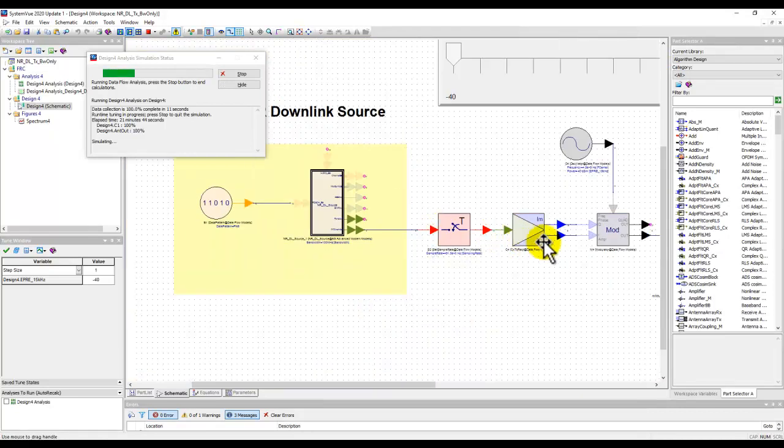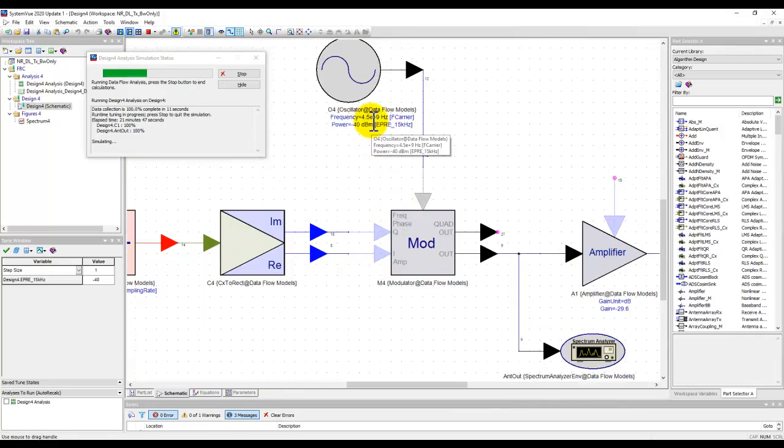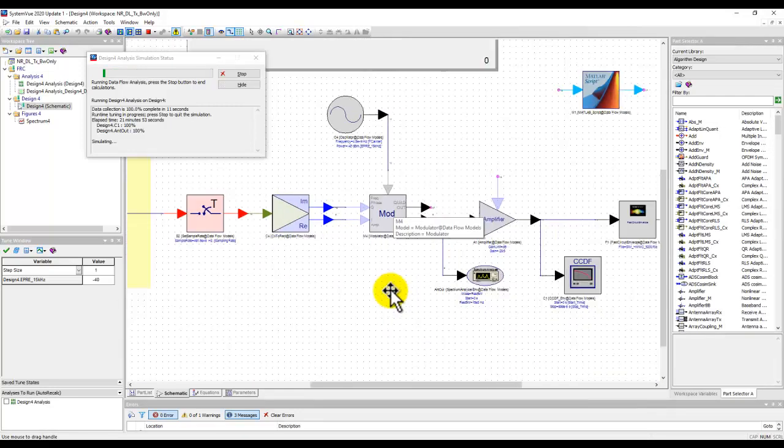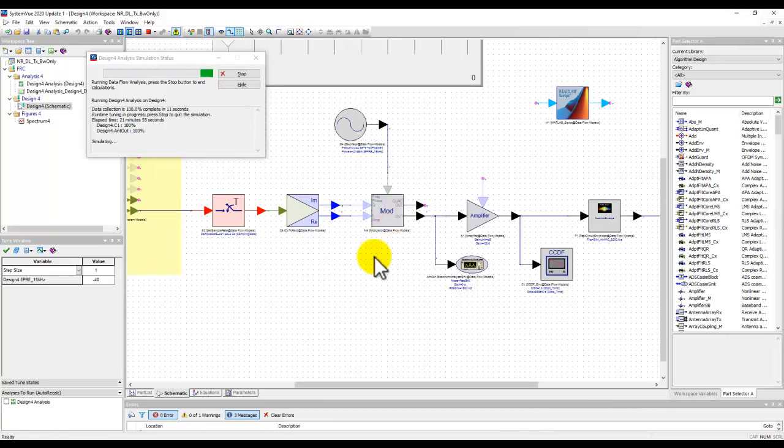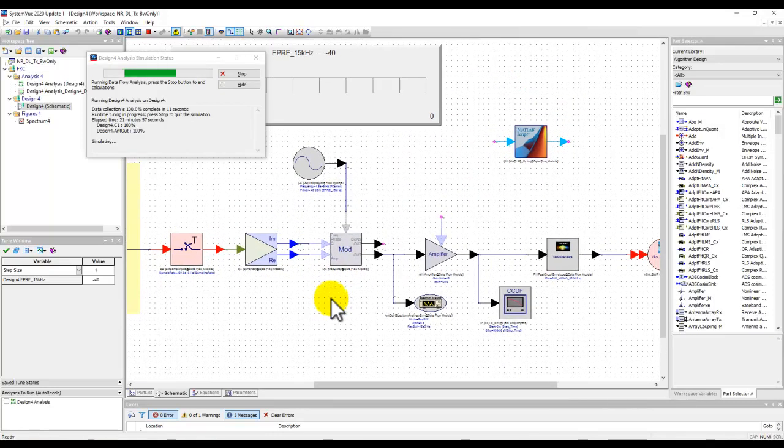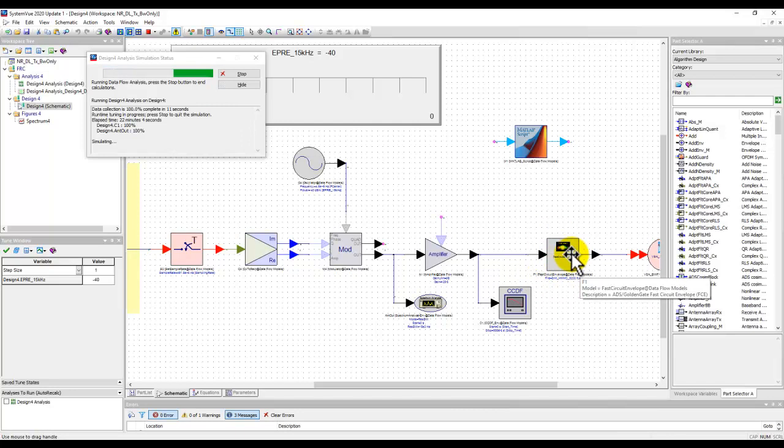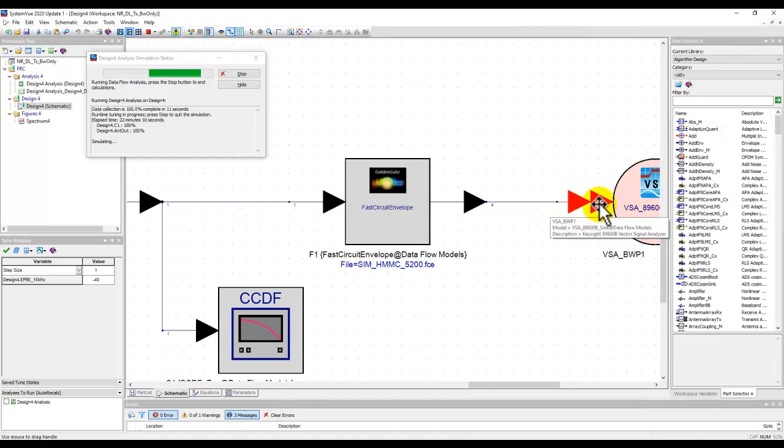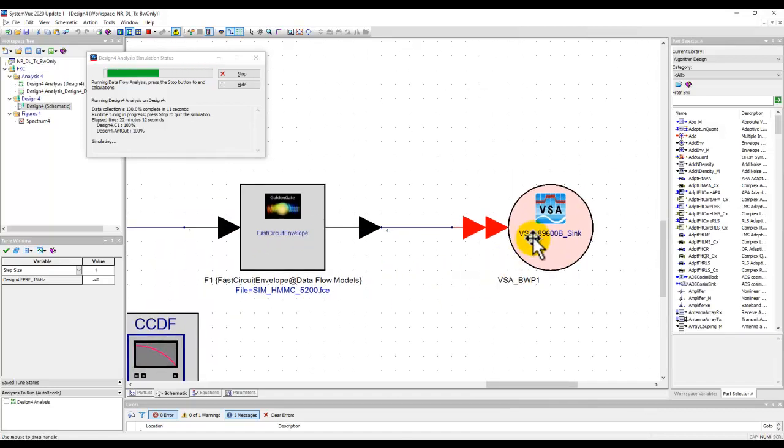This 5G generated signal then gets upconverted to 4.5 GHz using local oscillator and IQ modulator. Now, having these blocks also give designers a choice to add any impairments which they want to use before the signal enters the desired section, which is extracted by FCE. And here is the FCE model, which we just extracted.